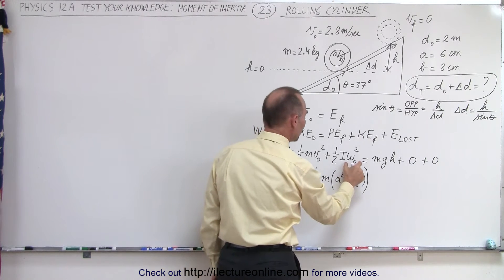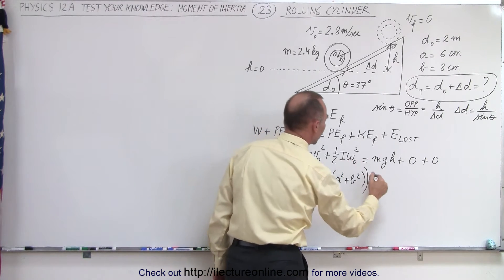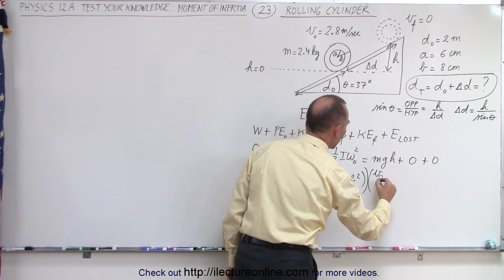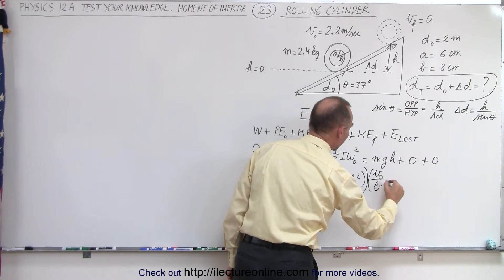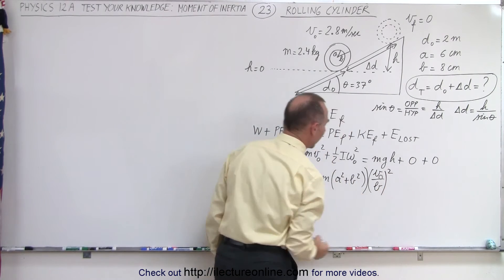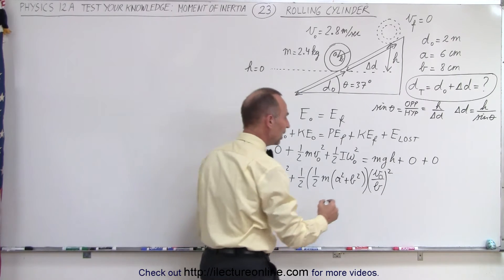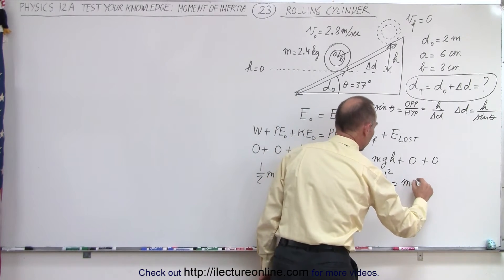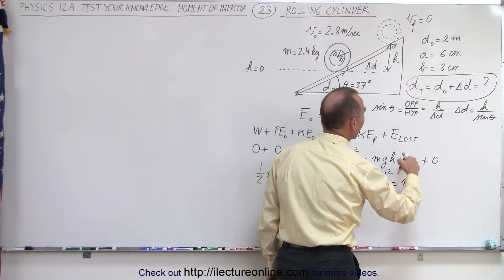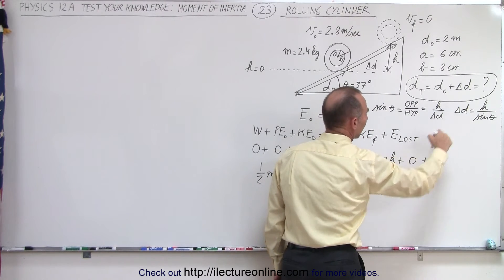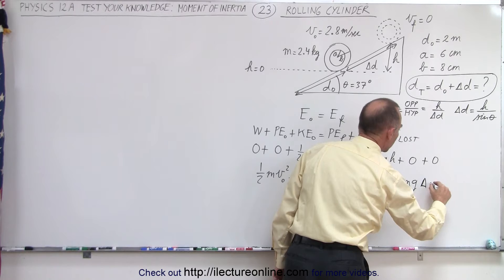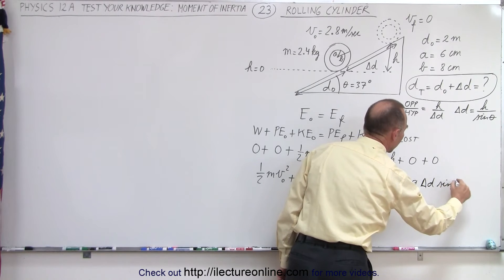Of course, we need to continue with that. And then we have to multiply times omega initial, now, omega initial can be written as v over r. In this case, we take the outer radius, and we have to square that. Now we set that equal to mgh. Now h can be written as delta d times the sine of theta, delta d times the sine of theta.